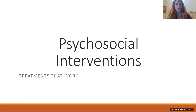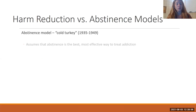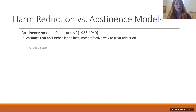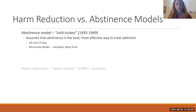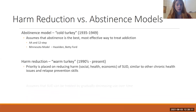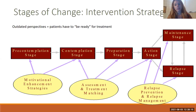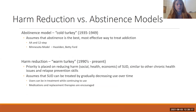In terms of specific psychosocial interventions, they can be broken into two categories. We have abstinence model programs, which have been around for quite some time and assume that abstinence is really the best and only mode of intervention — that's the AA or 12-step models.